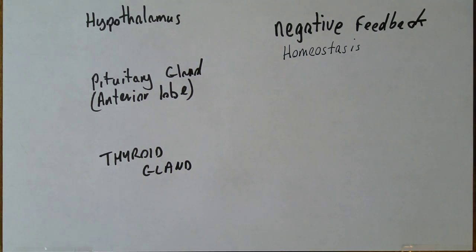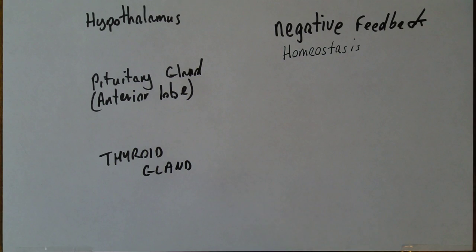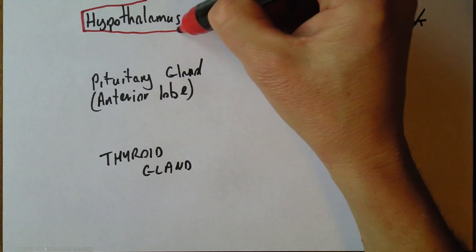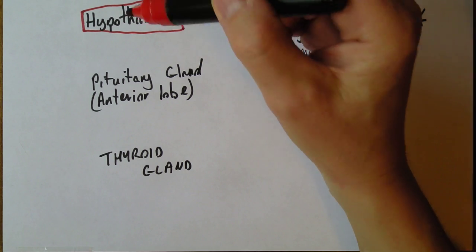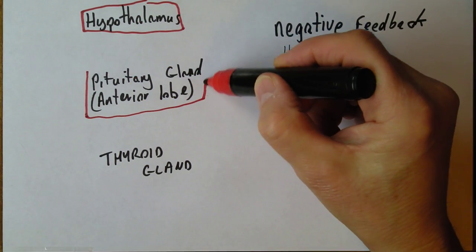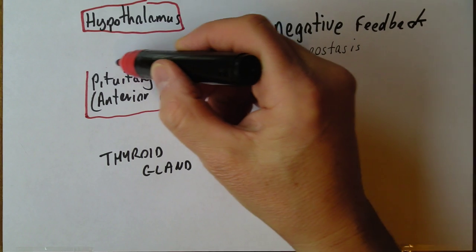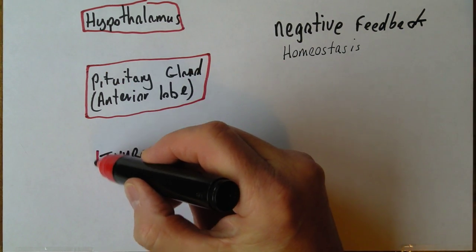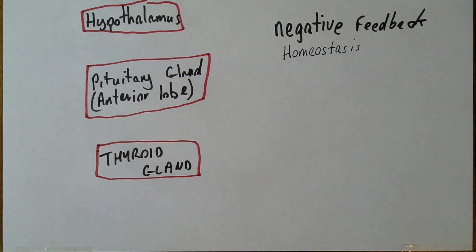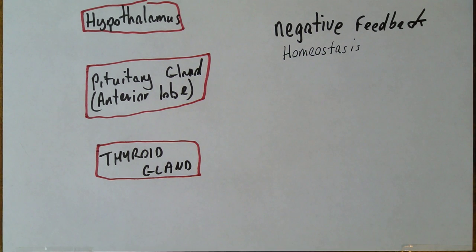So there we've actually got three anatomical structures. We've got the hypothalamus, the anterior lobe of the pituitary gland, and the thyroid gland, which is an anatomical structure in the neck.